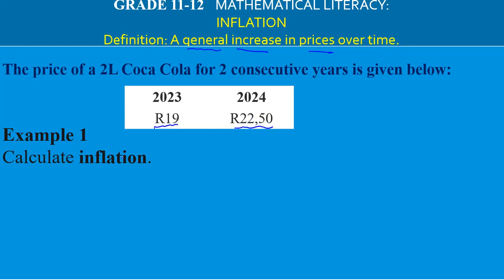Example one is very easy. To calculate inflation, we look at by how much the Coca-Cola increased. You take the 2024 price and minus the older 2023 price. The inflation in this example is R3.50 — you can work this out for yourself.